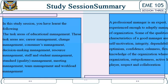Summary of study section 3. In this study session, you have learned the following. The task areas of educational management are: career management, change management, consumers management, decision-making management, resource management, staff and student management, standard quality management, meeting management, team management, and workload management. A professional manager is an expert trained and experienced enough to adeptly manage any type of organization. Some of the qualities and characteristics of a good manager are: self-motivation, integrity, dependability, reliability, optimism, confidence, calmness, flexibility, knowledge of the organization, outspokenness, active listener, team player, respect, and collaboration. This is the end of study section 3. Thanks for listening.